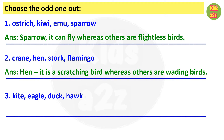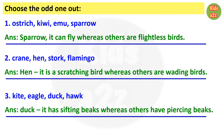Number 3: kite, eagle, duck and hawk. The odd one is duck because it has sieving beaks whereas the others have piercing beaks. Sieving beaks means a flat and broad beak with small holes on both sides. Piercing beaks means strong, sharp and curved beaks for tearing flesh.